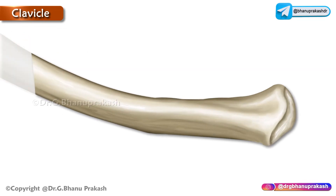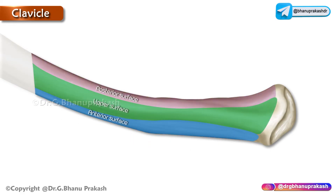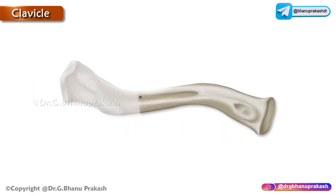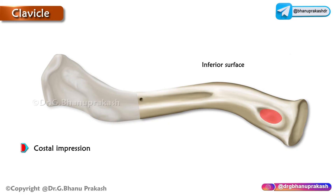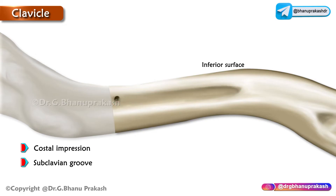The medial two-thirds presents with four surfaces. The anterior surface is rough and convex. The posterior surface is smooth and concave. The inferior surface presents with the costal impression that gives attachment to the costoclavicular ligament and the subclavian groove. Clavipectoral fascia is attached to the margins of the subclavian groove. The nutrient foramen is directed laterally and is present on the lateral part of the subclavian groove.